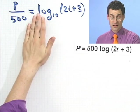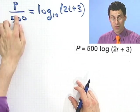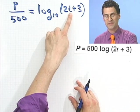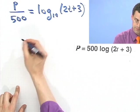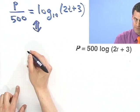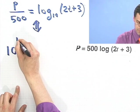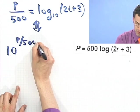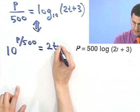Well, now I can just remember what a log is. A log is an exponent. So that's the exponent I have to raise the base 10 to in order to get that value. So I can just convert this into the identical statement, which would say 10 to the P over 500 power equals 2t plus 3.